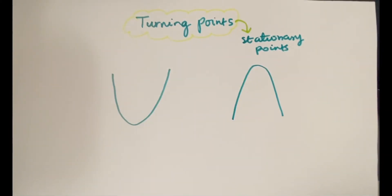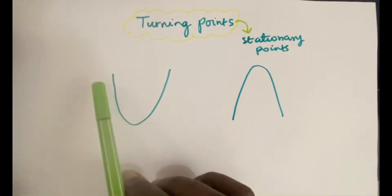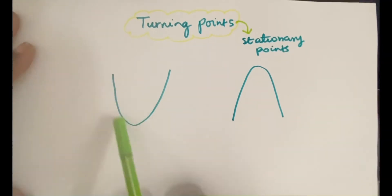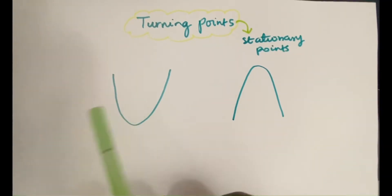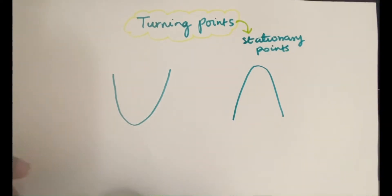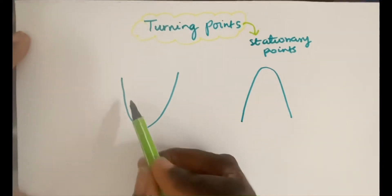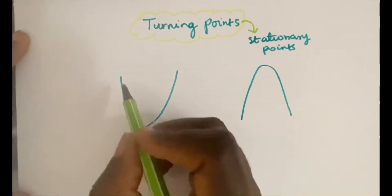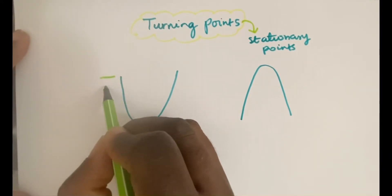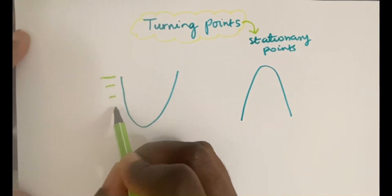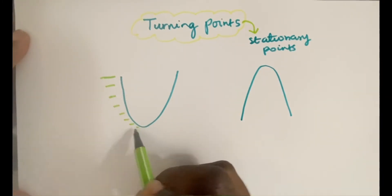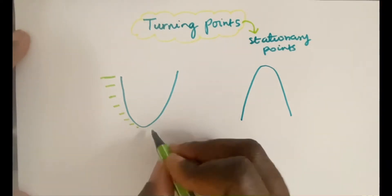On a curve, the gradient — the derivative — is different at every single point, and differentiation helps us to find the gradient at those points. If you start off on this quadratic curve, for example, it starts off with a negative gradient, but notice how the gradient starts getting smaller and smaller.